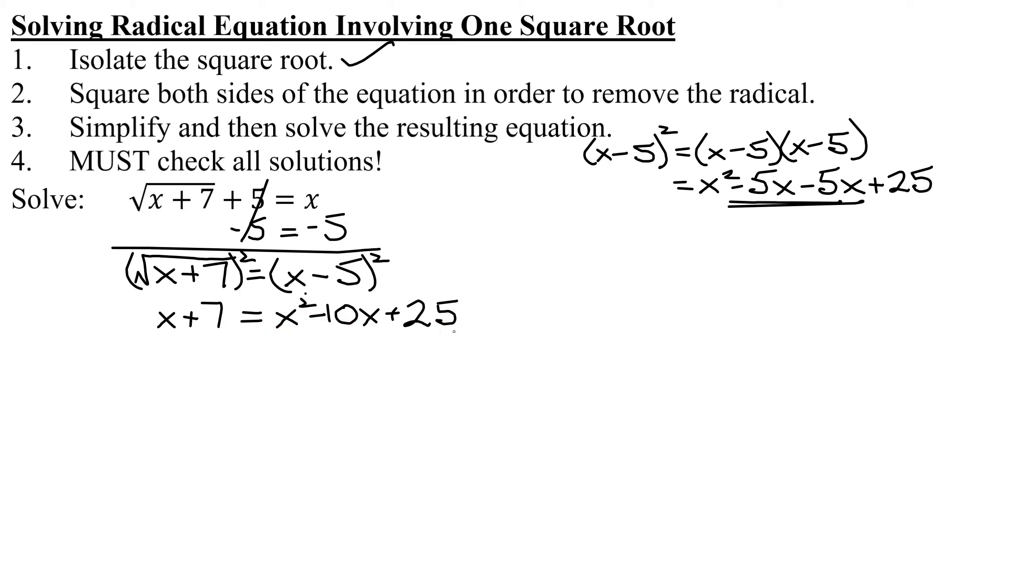So now we have squared both sides in order to remove the radical. Notice I have no more radicals left. Step 3 says simplify and solve the resulting equation. What type of equation do I have here? Notice it's a degree 2 equation, a quadratic equation. So we want to solve it by factoring or the quadratic formula. But for both of those methods, you need 0 on one side.